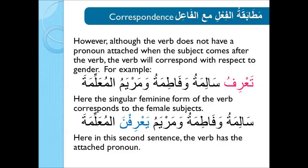However, although the verb does not have a pronoun attached when the subject comes after the verb, the verb will correspond with respect to gender. For example: تَعْرِفُ سَالِمَةُ وَفَاطِمَةُ وَمَرْيَمُ الْمُعَلِّمَةَ. Here, the singular feminine form of the verb corresponds to the female subjects. Otherwise, with the subject before the verb: سَالِمَةُ وَفَاطِمَةُ وَمَرْيَمُ يَعْرِفْنَ الْمُعَلِّمَةَ — where the verb has the attached pronoun.